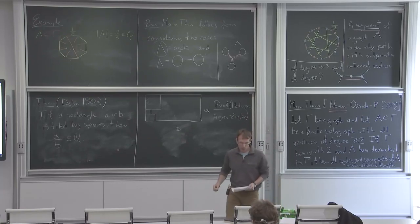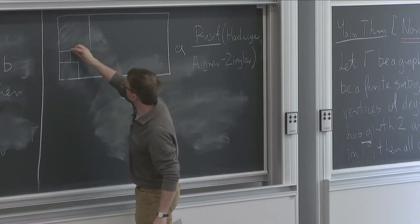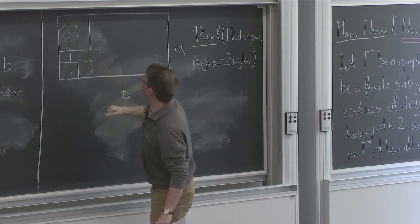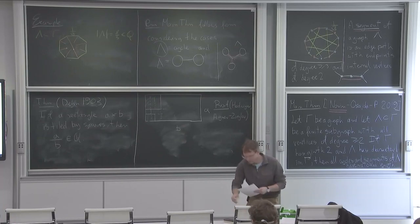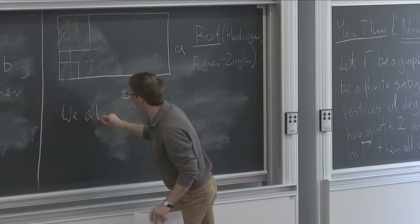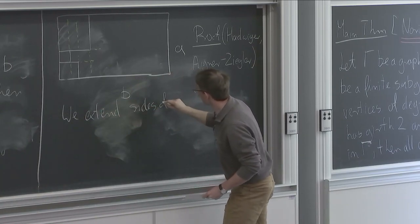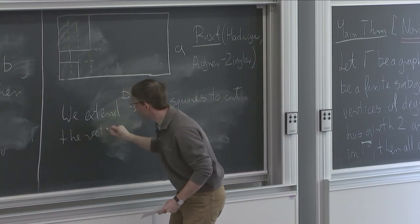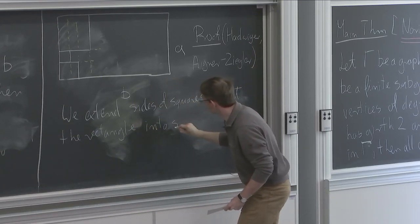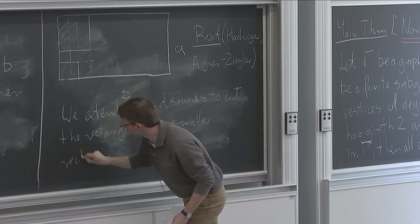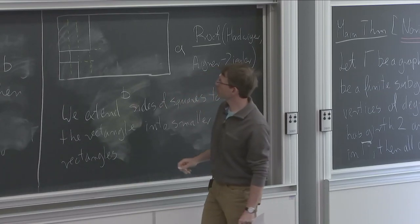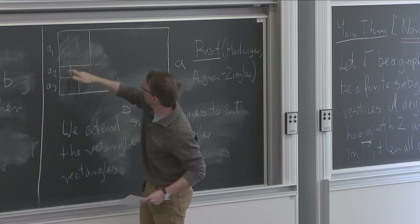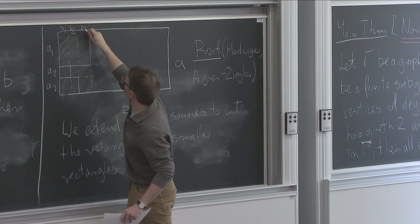I will give a proof due to Hadwiger, with the presentation given in the book of Aigner and Ziegler, 'Proofs from the Book.' We extend the square sides — extending vertically the square sides, and the horizontal ones — to cut the entire rectangle into smaller rectangles. Let's call the side lengths of these smaller rectangles: vertically A1, A2, A3, and horizontally V1, V2, V3, etc.